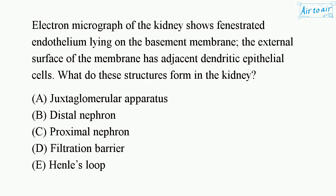An electron micrograph of the kidney shows fenestrated endothelium lying on the basement membrane. The external surface of the membrane has adjacent dendritic epithelial cells. What do these structures form in the kidney? A. Juxtaglomerular apparatus. B. Distal nephron. C. Proximal nephron. D. Filtration barrier. E. Henle's loop.